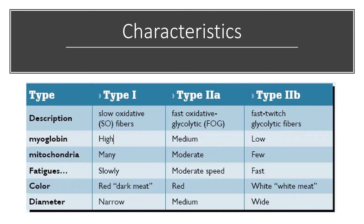The three fiber types are described as slow oxidative, fast oxidative, and fast twitch. Type 1 and type 2A are both oxidative, meaning they are capable of processing oxygen relatively efficiently and therefore fatigue a little bit slower. The type 2B is fast twitch and glycolytic, which means it's not going to be able to produce that peak power for very long and will be exhausted relatively quickly.